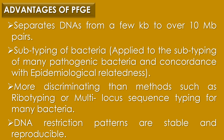Advantages of pulsed field gel electrophoresis: PFGE separates DNAs from a few kb to over 10 megabase pairs. It can be applied as a universal generic method for subtyping of bacteria. PFGE subtyping has been successfully applied to many pathogenic bacteria and has high concordance with epidemiological relatedness. PFGE has been shown to be more discriminating than methods such as ribotyping or multi-locus enzyme typing. DNA restriction patterns generated by PFGE are stable and reproducible.